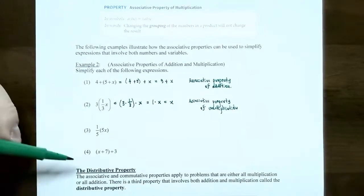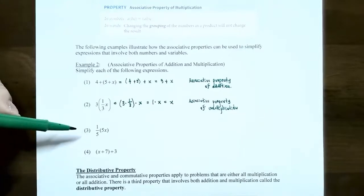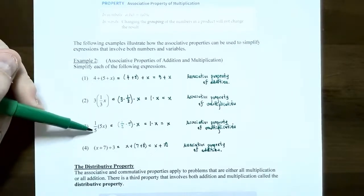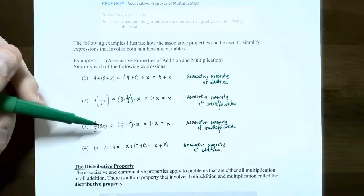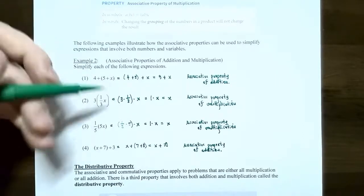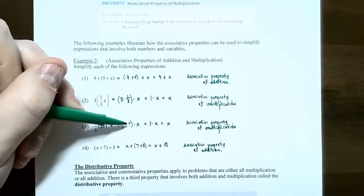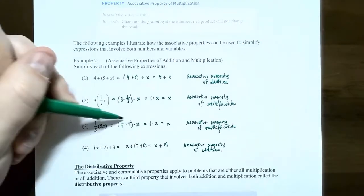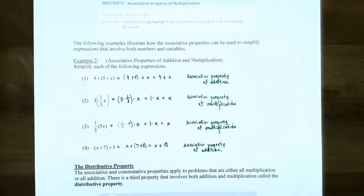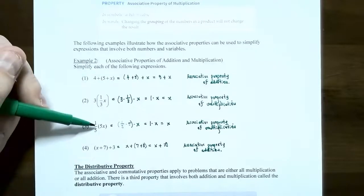For the next two problems, try them yourself first — pause the video and then we'll check answers. Number 3: one-fifth times (5x). Using the associative property of multiplication, rewrite this as (one-fifth times 5) times x. One-fifth times 5 is 1, and 1 times x is x. So use the associative property of multiplication to rewrite this as one-fifth times five first.